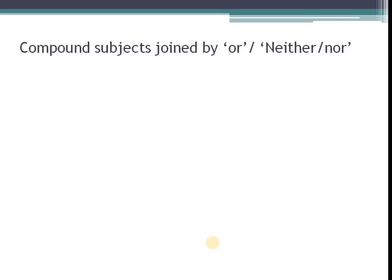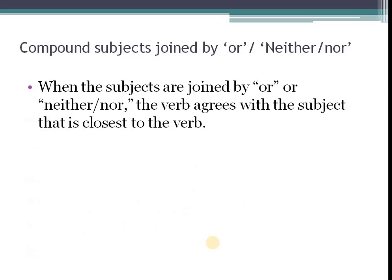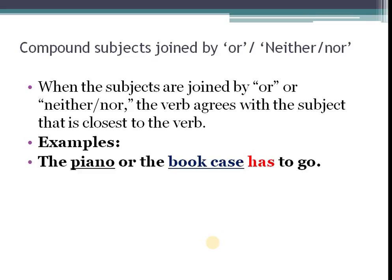And now we look at subjects joined by or or neither nor. When the subject is joined by or or neither nor, the verb agrees with the subject that is closest to the verb. And that's a simple rule. The verb agrees with the subject that is closest to the verb. And let's look at it.